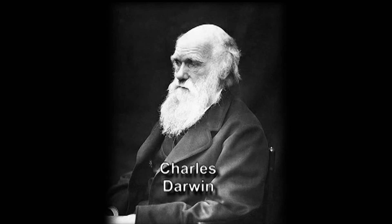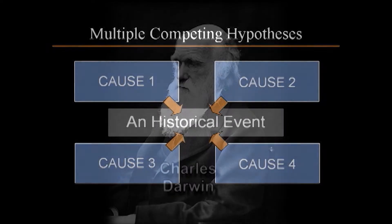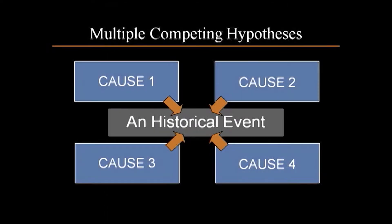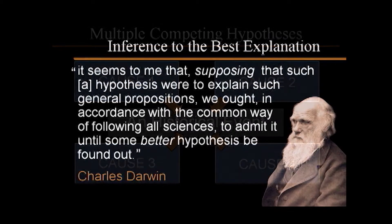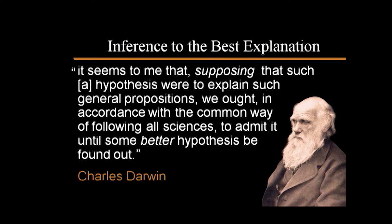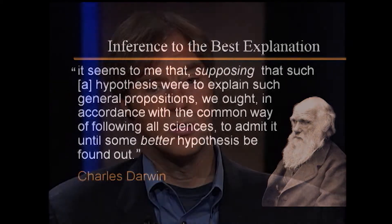The reason I would say that is that in making my case for intelligent design, I use a standard historical scientific method — in fact, the very method of scientific reasoning that Darwin himself used in The Origin of Species. The method has a name: it's called the method of multiple competing hypotheses, or the method of inferring to the best explanation. And Darwin used that.